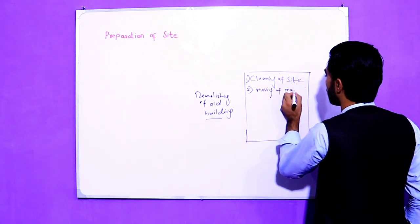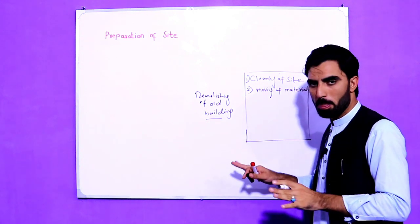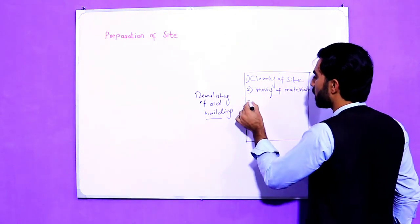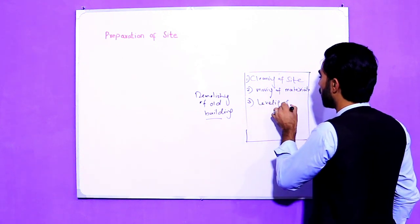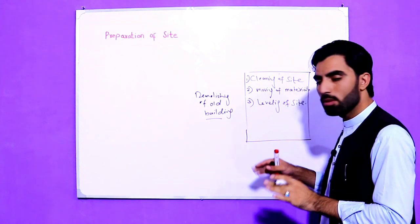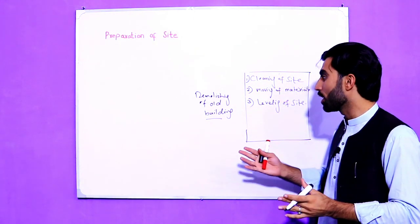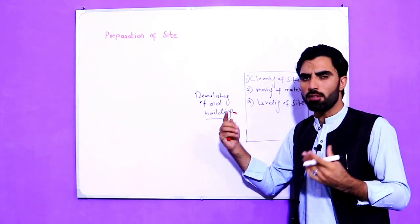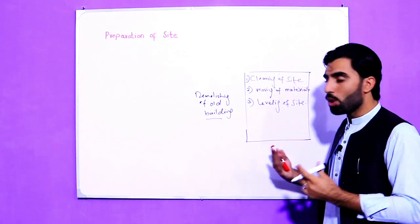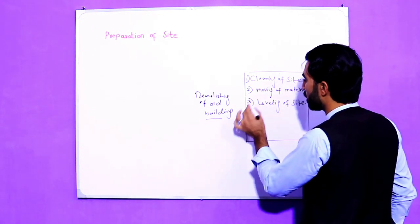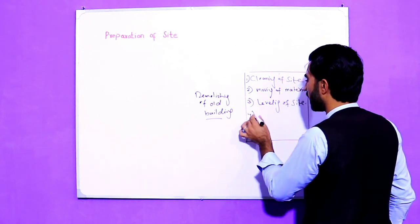The second step in site preparation is moving of materials. If there are trees or anything on the site, you will clean and remove them. The third step is leveling of the site, because there may be uneven ground. First you clean, then move or demolish old building materials, and the third step is leveling of the site.